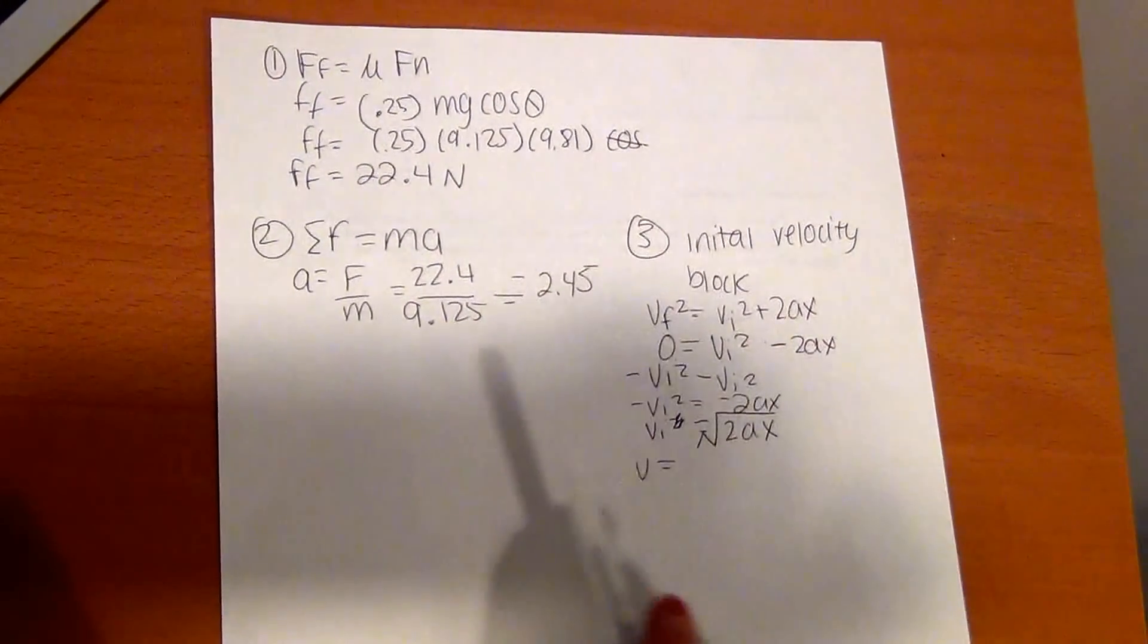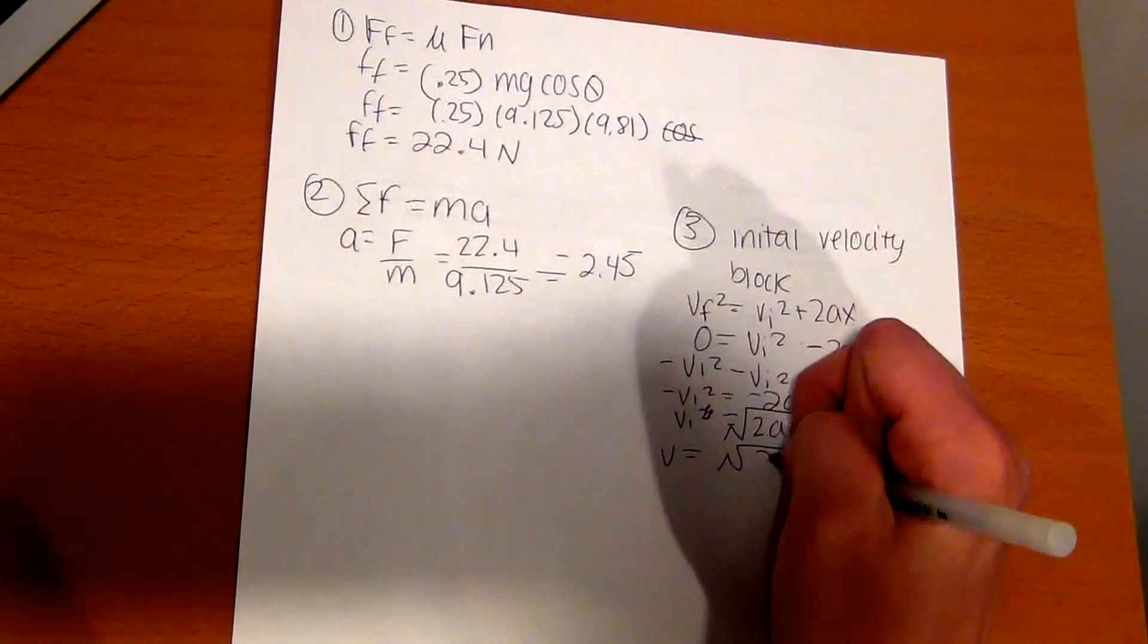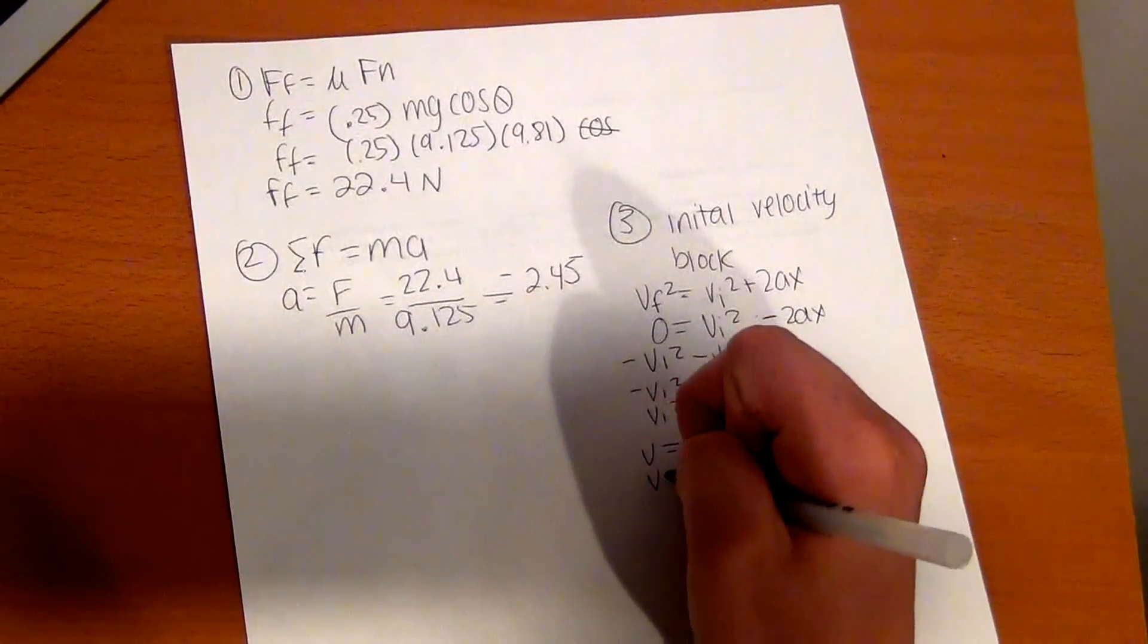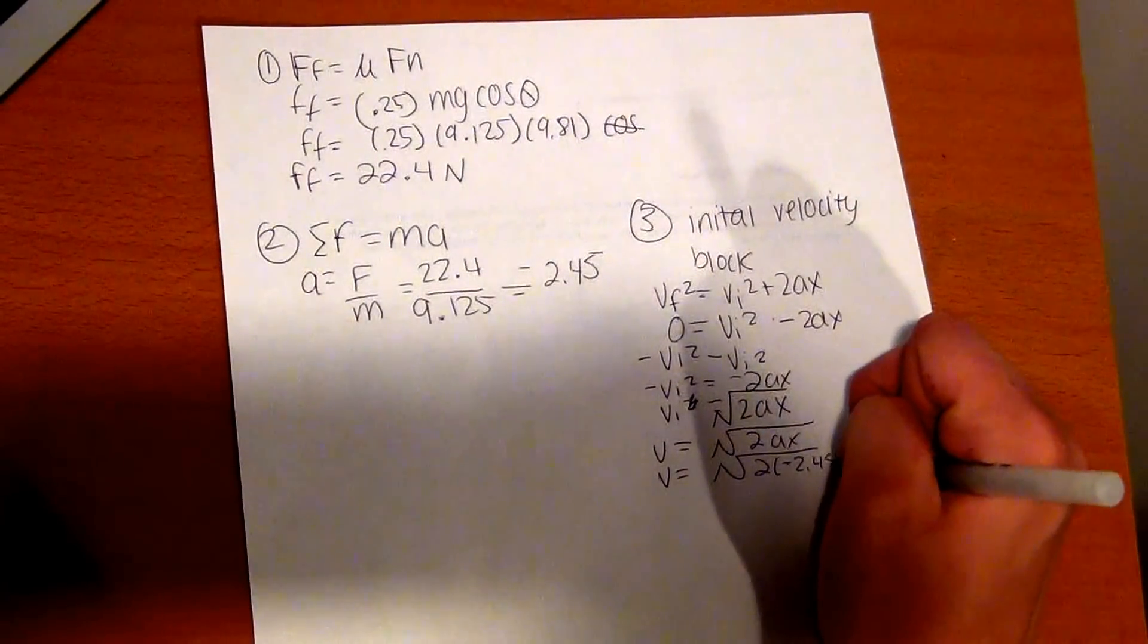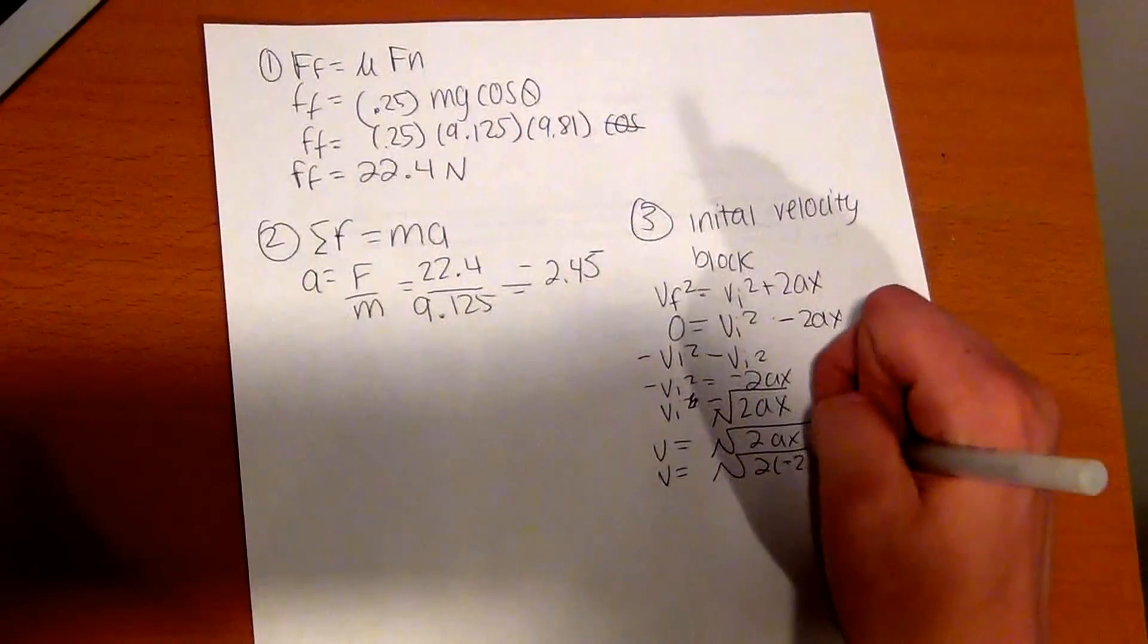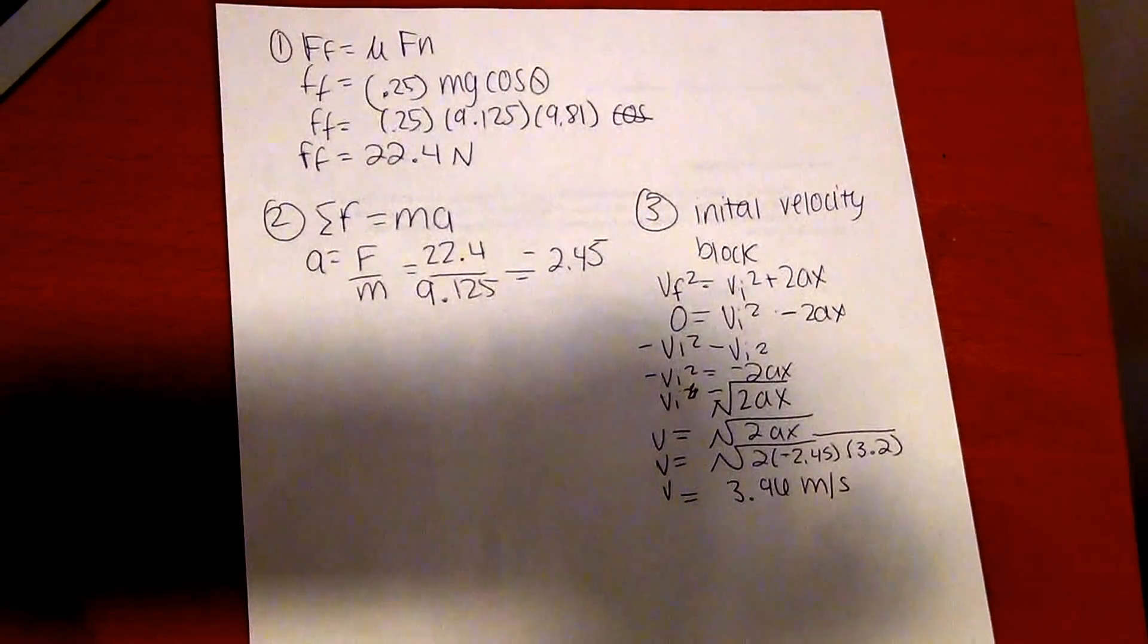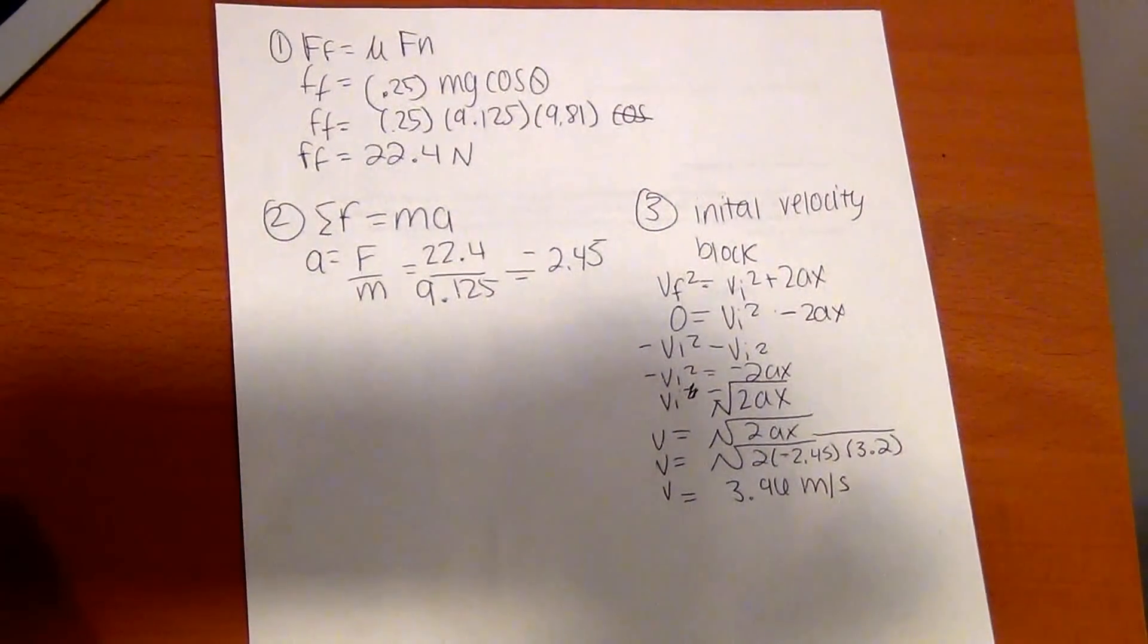So now that we finally have V all by itself isolated on one side, the form is V equals the square root of 2AX. Since we know A and X, we can put the numbers in. So 2A is the acceleration, negative 2.45, and X is the distance between the two blocks, which is 3.2. After you put it in your calculator, you should get 3.96 meters per second. So that's the third step—the initial velocity of the block is 3.96 meters per second.